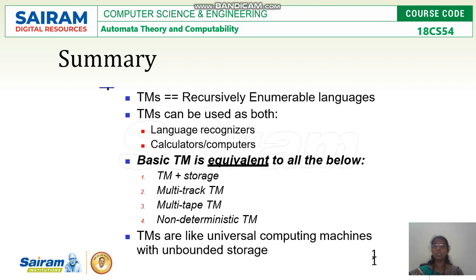To summarize: the language accepted by a Turing machine is a recursively enumerable language, and Turing machine is both a language recognizer and a calculator. A Turing machine with storage, multi-track, multi-tape, and non-deterministic Turing machine are all equivalent to the basic or standard Turing machine. Turing machines are universal computing machines with unbounded storage.